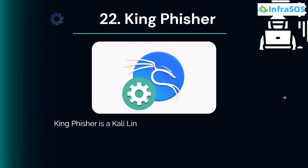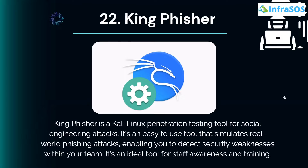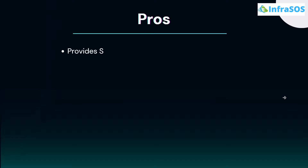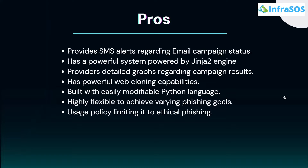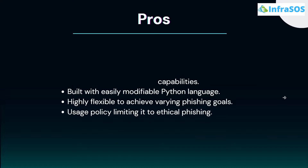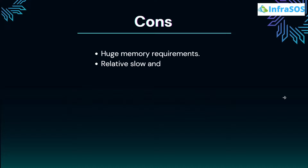At number 22 we have King Phisher. King Phisher is a Kali Linux penetration testing tool for social engineering attacks. It is an easy-to-use tool that simulates real-world phishing attacks and enables you to detect security weaknesses within your team, making it ideal for staff awareness and training. Major pros include SMS alerts regarding email campaign status, being powered by the Jinja2 engine, providing detailed graphs regarding campaign results, and powerful web cloning capabilities. Cons include huge memory requirements and being relatively slow and time-consuming.